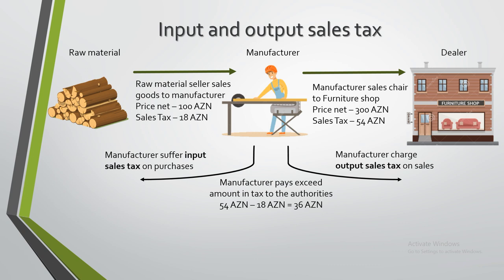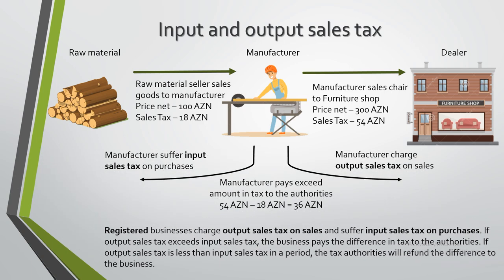The manufacturer pays the excess amount to the tax authorities — 36 ASEAN. In conclusion, we can say that registered businesses charge output sales tax on sales and suffer input sales tax on purchases. If output sales tax exceeds input sales tax, the business pays the difference in tax to the tax authorities. If output sales tax is less than input sales tax in a period, the tax authorities will refund the difference to the business.